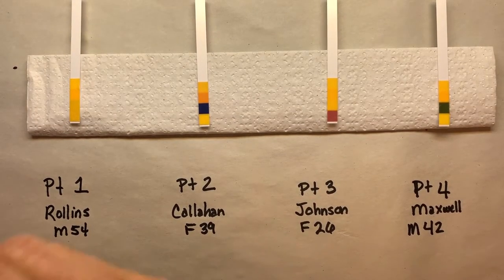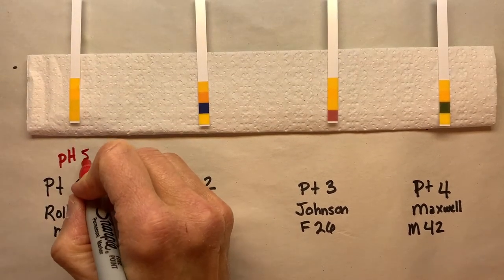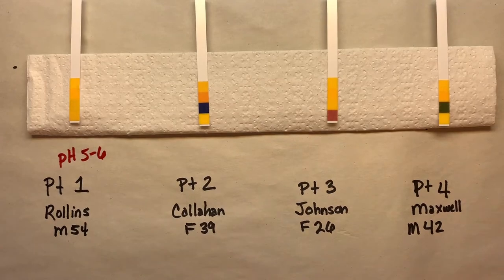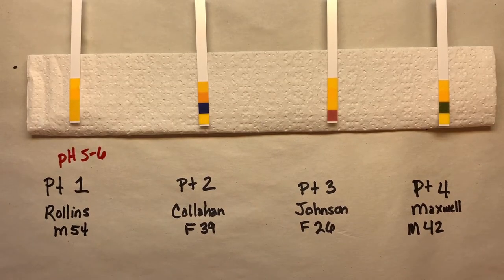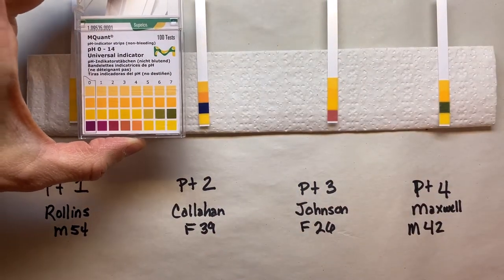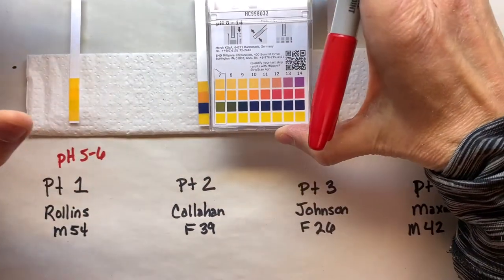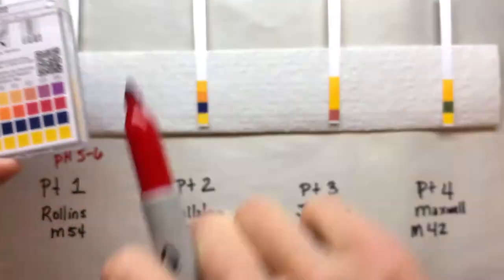And then for Ms. Callahan, the 39-year-old female, we notice that this is not on the acidic side, it's very basic. So let's look at the basic chart here and see what we can match.